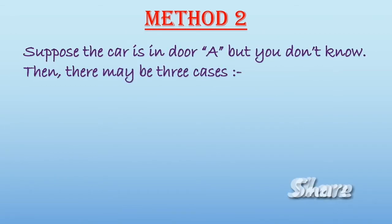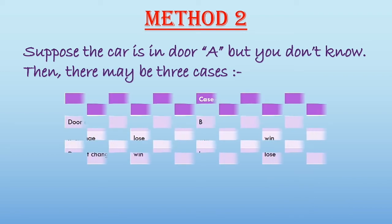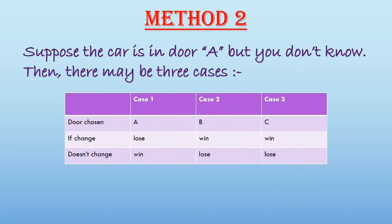Second method without using probability. If you think the door has the car behind it but you don't know, so if you don't know then you can select any door.